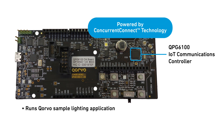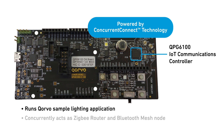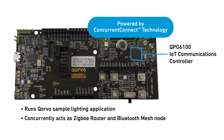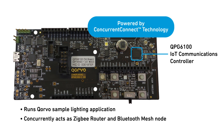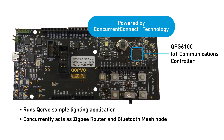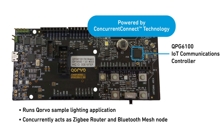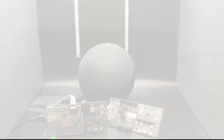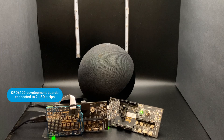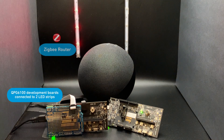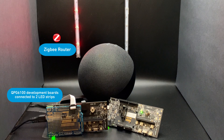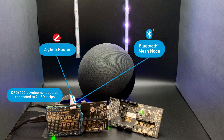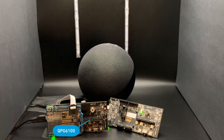Basically, you will observe how Concurrent Connect technology allows the light to function concurrently as a router in a ZigBee network and as a mesh node in a Bluetooth low-energy mesh network. To observe what's happening, we've connected the development kit to two LED light strips. The red light indicates communication over ZigBee, while the blue light indicates communication over Bluetooth mesh. Both lights are controlled by a single QPG6100.